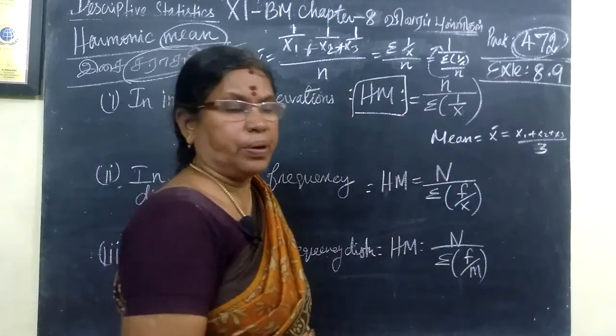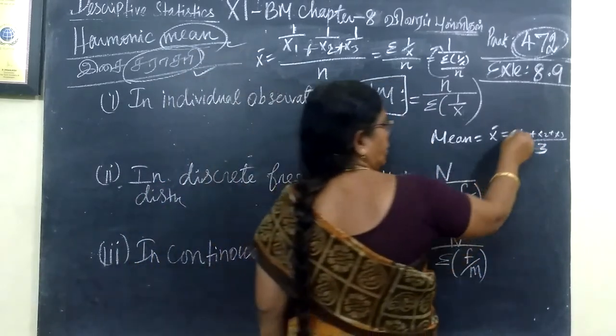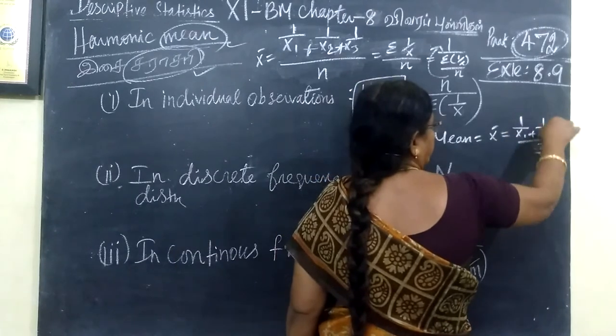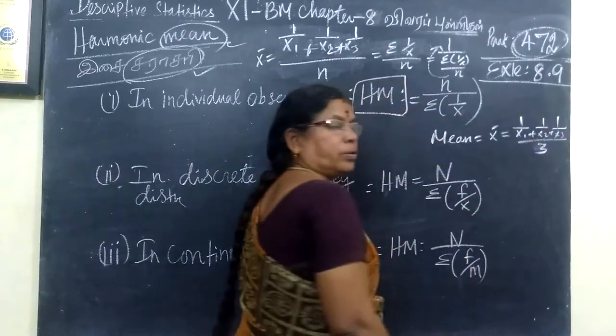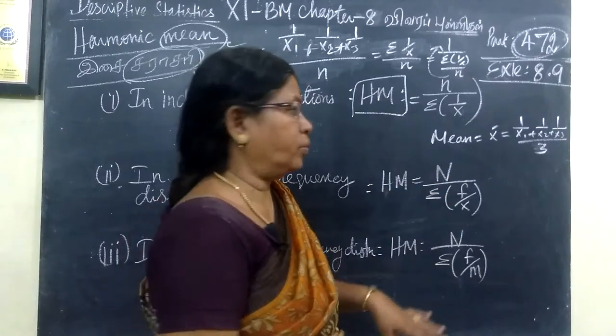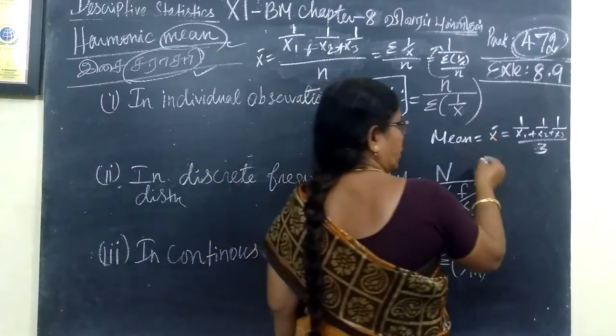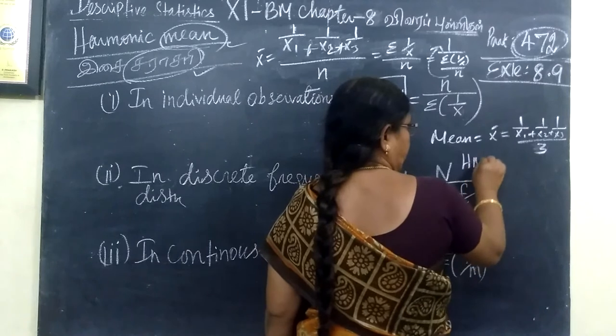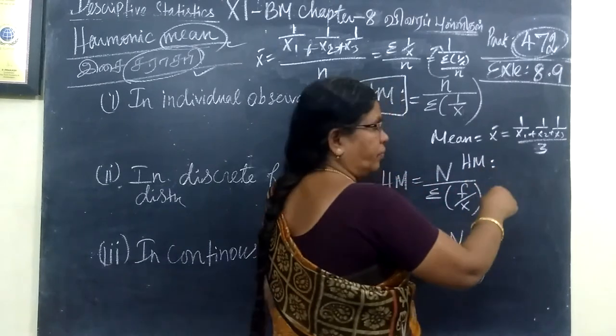Now with 3 values, harmonic mean is different. This is reciprocal. The value will exist with reciprocal.